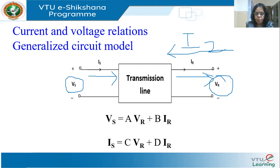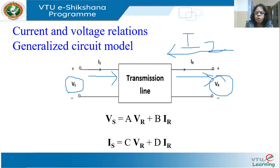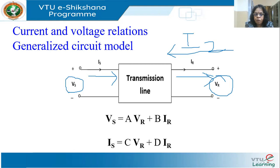Why is it called generalized? Because I have not specified the transmission line model — it could be short, medium, or long. Depending on the model, I have to correctly calculate A, B, C, D. Vs, Is, Vr, Ir are all phasor quantities. Therefore A, B, C, D are all complex numbers.